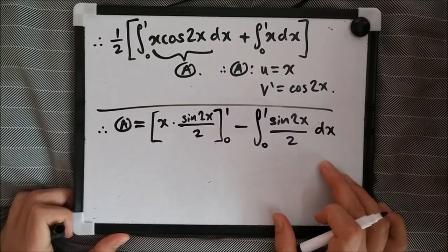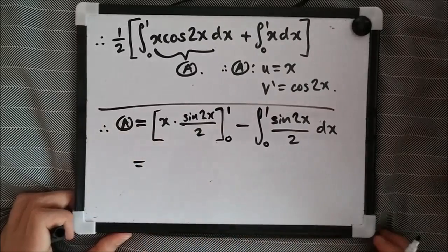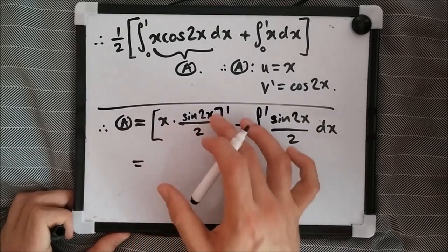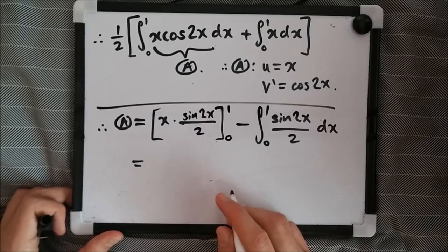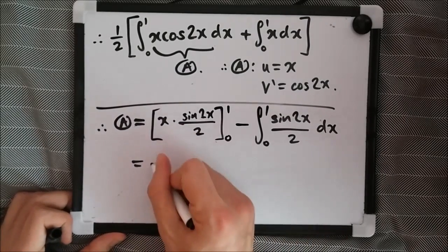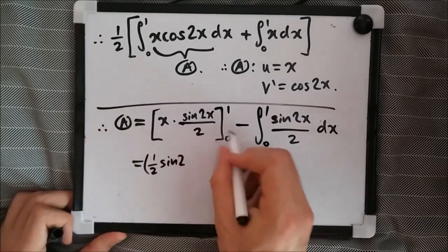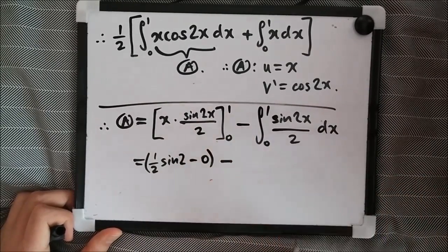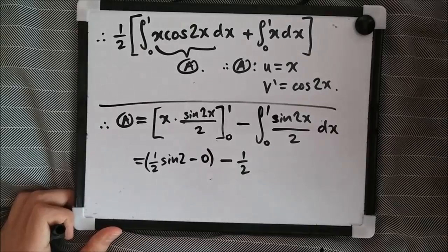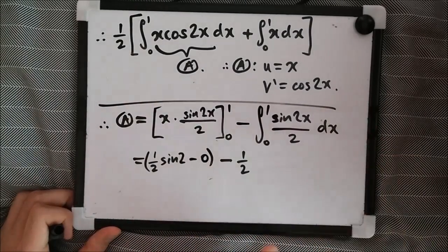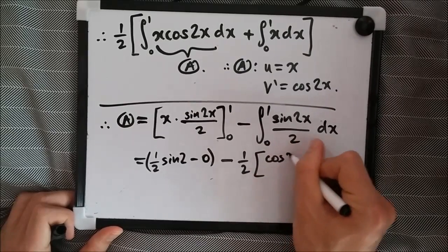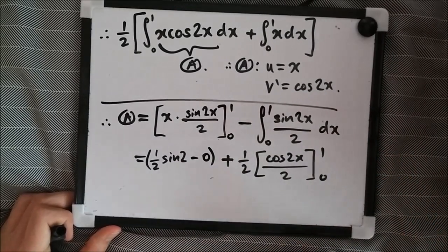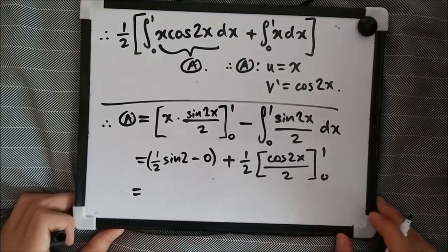So far, so good. Evaluating this term here directly, we should get x sine 2x. If you substitute 1 here, we're going to get sine 2 over 2. I'm going to write it in standard form. We're going to get half sine 2. That's the first term. If you substitute 0, of course, it's going to be 0 directly. So we can just leave it like that.